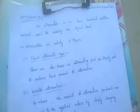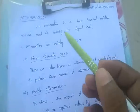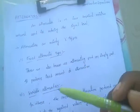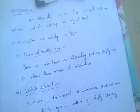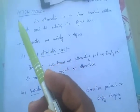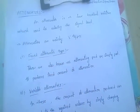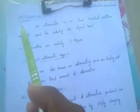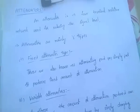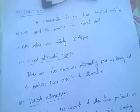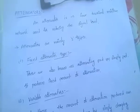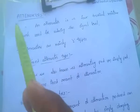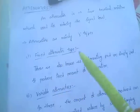In this video I am going to discuss network filters and transmission line topics. An attenuator is a four terminal resistive network. It is used for reducing the signal level.